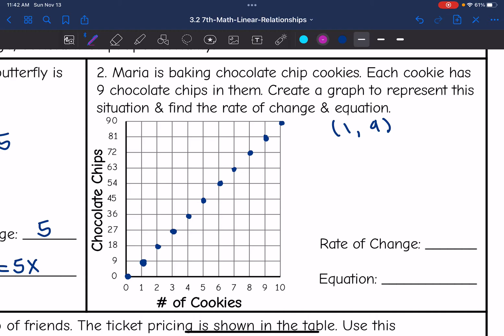So the x value is 1 and the y value is 9. So to find k, the constant of proportionality, I will do 9 divided by 1, which is 9. So my rate of change is 9 for the nine chocolate chips in each cookie. And that means my equation would be y equals 9x.